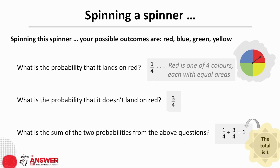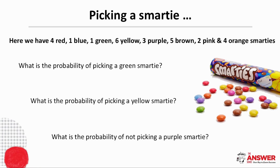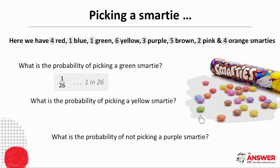We call events that encompass the entire range of possible outcomes in a sample space exhaustive events. And now for the smarties: working with the smarties in the picture here, let's answer the following questions. What is the probability of picking a green smartie? There are 26 smarties altogether if we add up all the numbers of the different colours, and one green smartie. Therefore, the probability of picking a green smartie is 1 over 26.